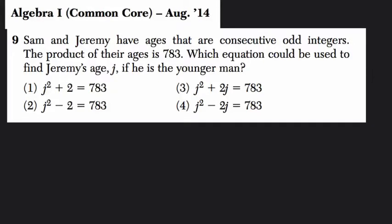Hello and welcome. Please pause this video and try this problem on your own. Alright, so let's read this problem. Sam and Jeremy have ages that are consecutive odd integers. So let's break apart this phrase right here.